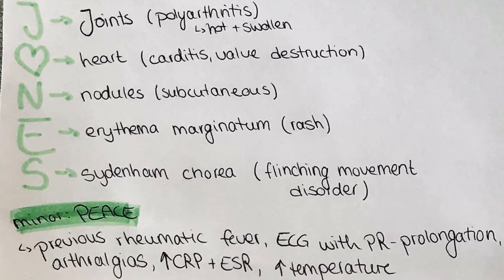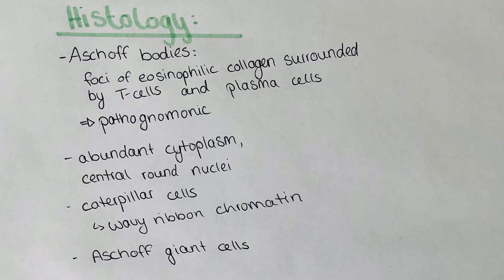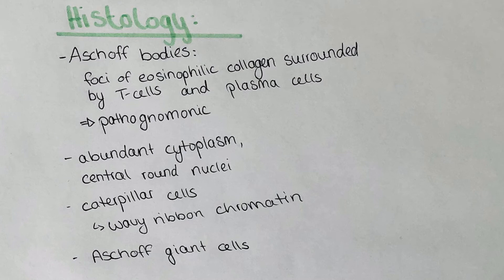Since this is a video in our pathology series, I also want to talk about histology. Characteristic for rheumatic fever are Aschoff bodies — foci of eosinophilic collagen surrounded by T cells and plasma cells. They are pathognomonic, meaning that if you see them you can definitively diagnose rheumatic fever. There is also usually abundant cytoplasm and central round nuclei which form caterpillar cells, because within them the chromatin is arranged in a wavy ribbon-like form. Also visible are Aschoff giant cells, where Aschoff bodies fuse to form multinucleated cells.